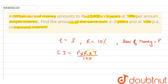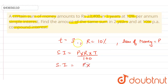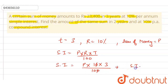Here r is rate, t is time, and p is the principal amount. So we can write that simple interest is p × 10 × 3 / 100. The zeros cancel, so simple interest equals 3p/10.